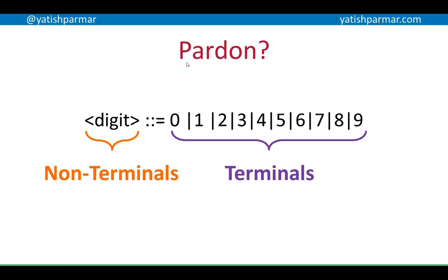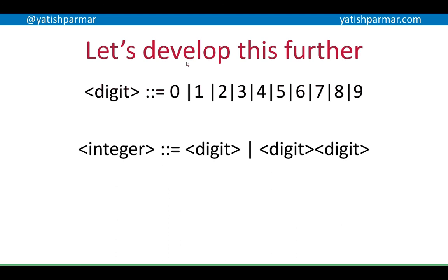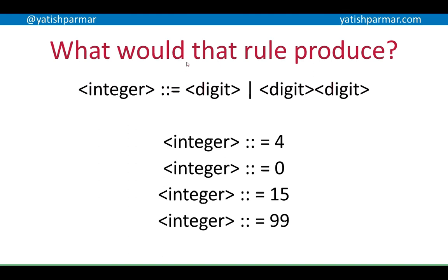If we develop that further — if digit is defined by 0 to 9, then I can say that integer is defined by digit, or digit digit. That means I can now produce integers by simply replacing the syntactic entity on the left. So that would give me 4, 0, 15, 99 — these are all valid integers as defined by that rule.